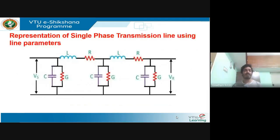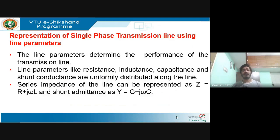This is a representation of a single phase transmission line using line parameters. When current flows through the line, you have resistance, and that current is also responsible for the magnetic field which gives rise to inductance. As a result, resistance and inductance are connected in series. The other two components — capacitance and conductance — are connected in shunt, because between conductor 1 and conductor 2 there is air which acts as a dielectric medium, giving rise to capacitance. These parameters are uniformly distributed along the line and are therefore called distributed parameters.